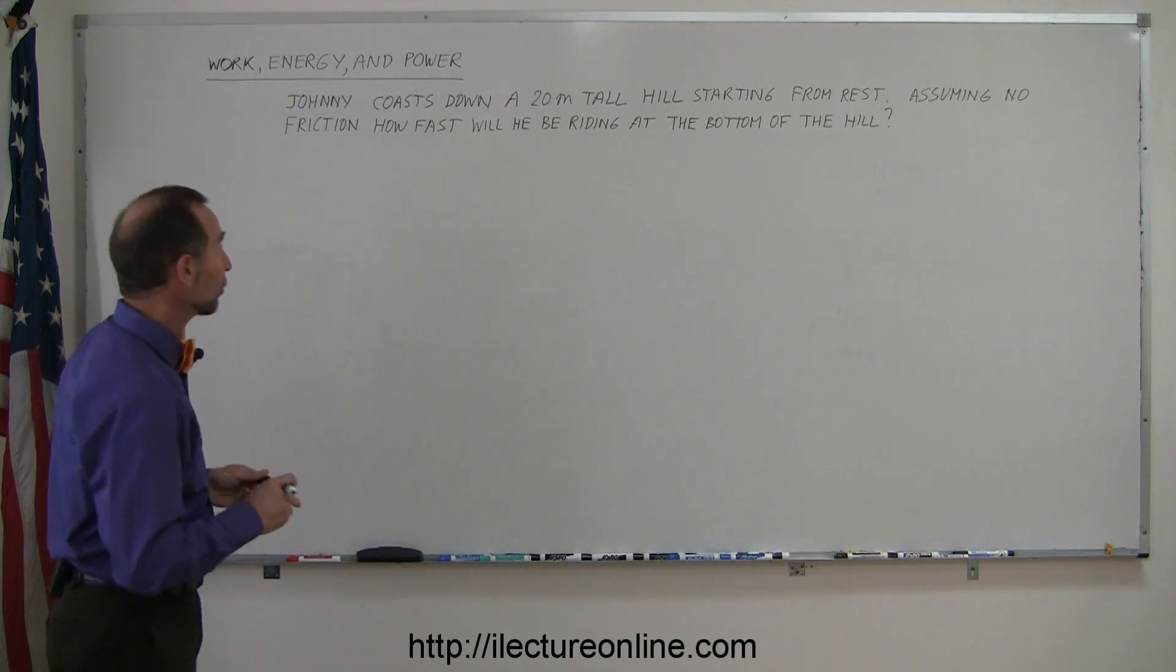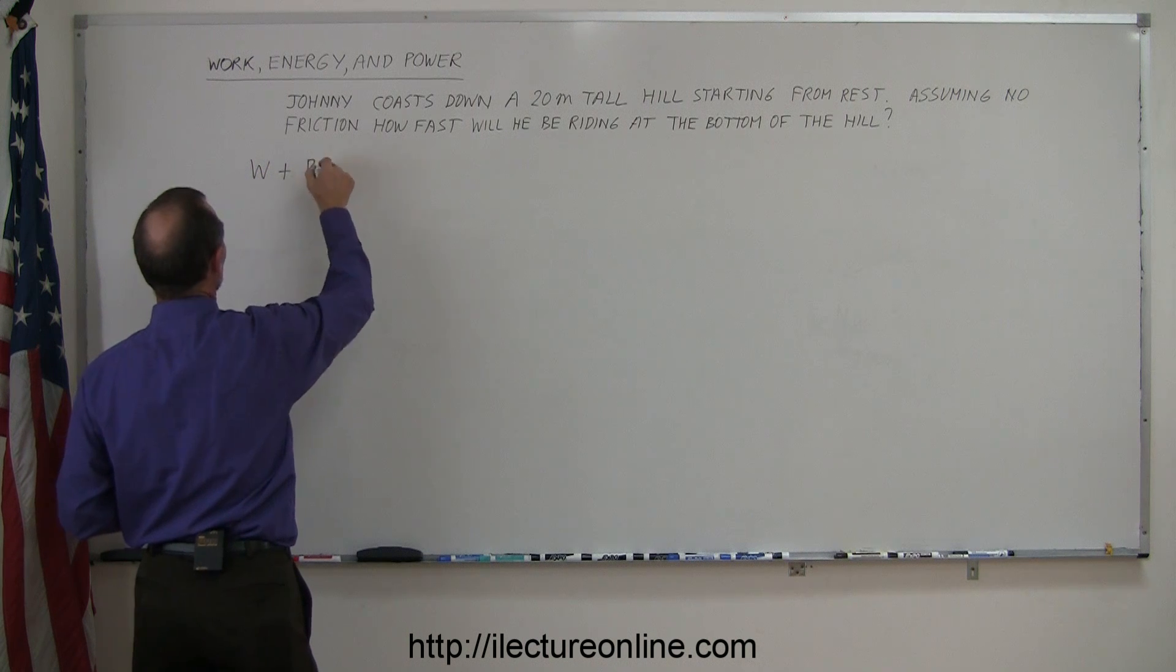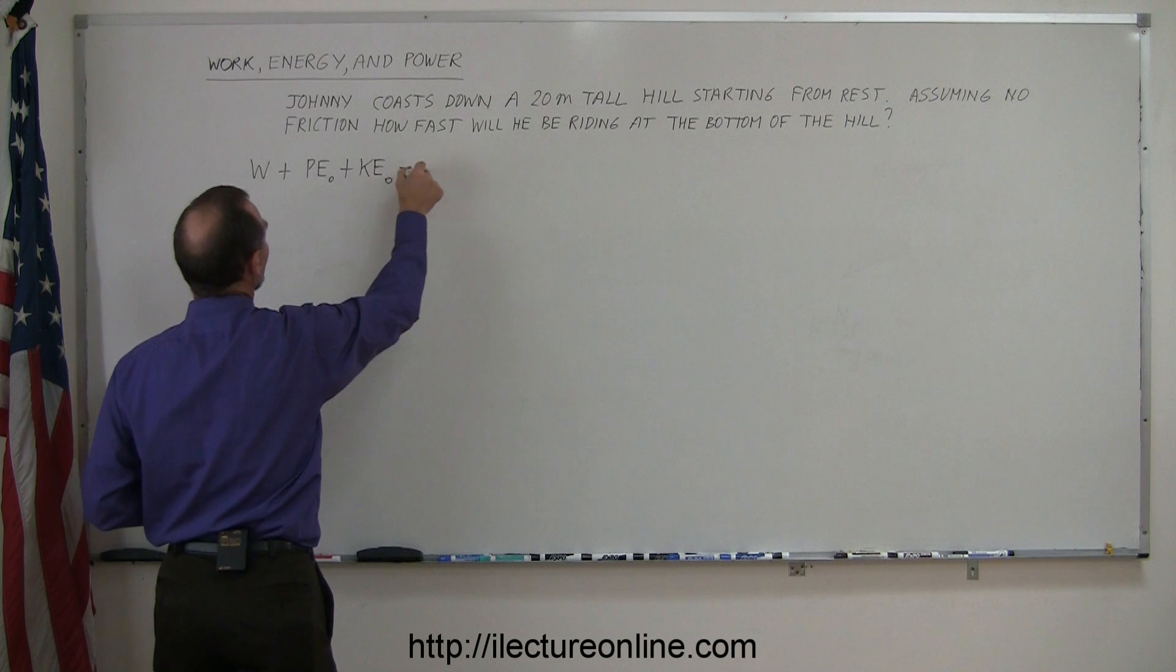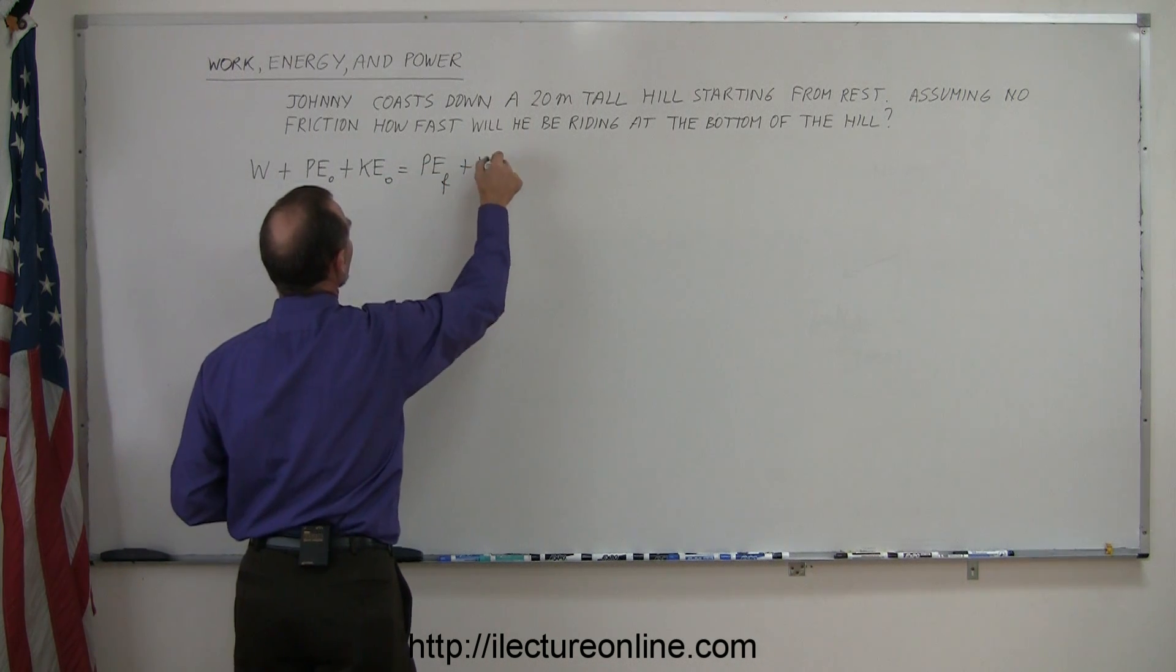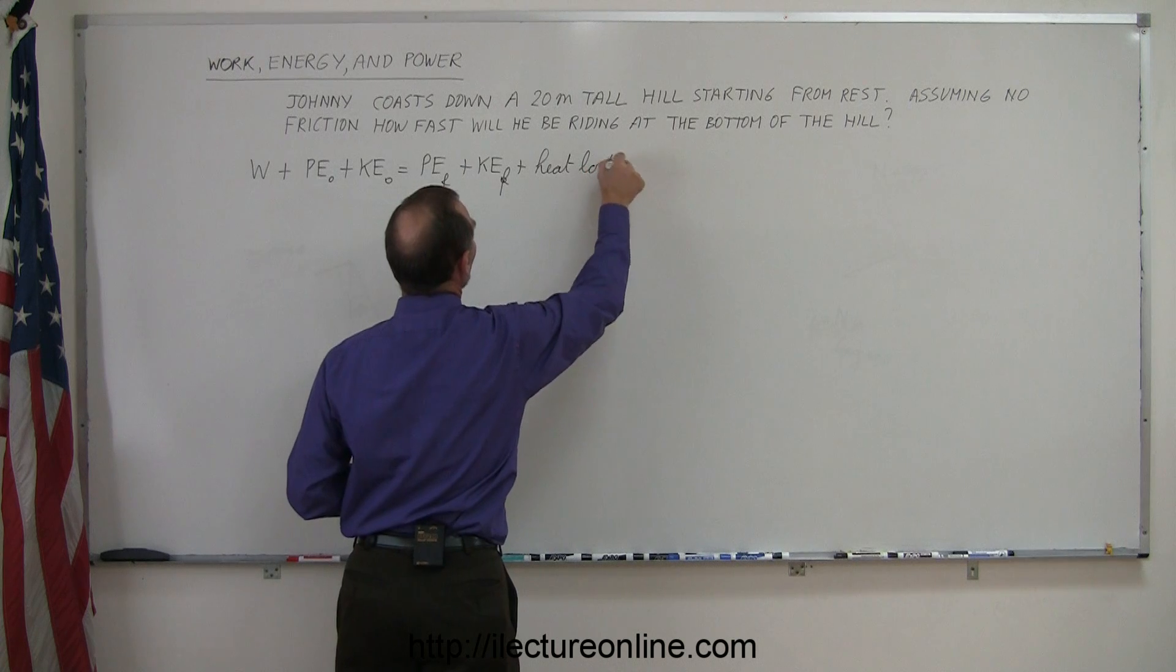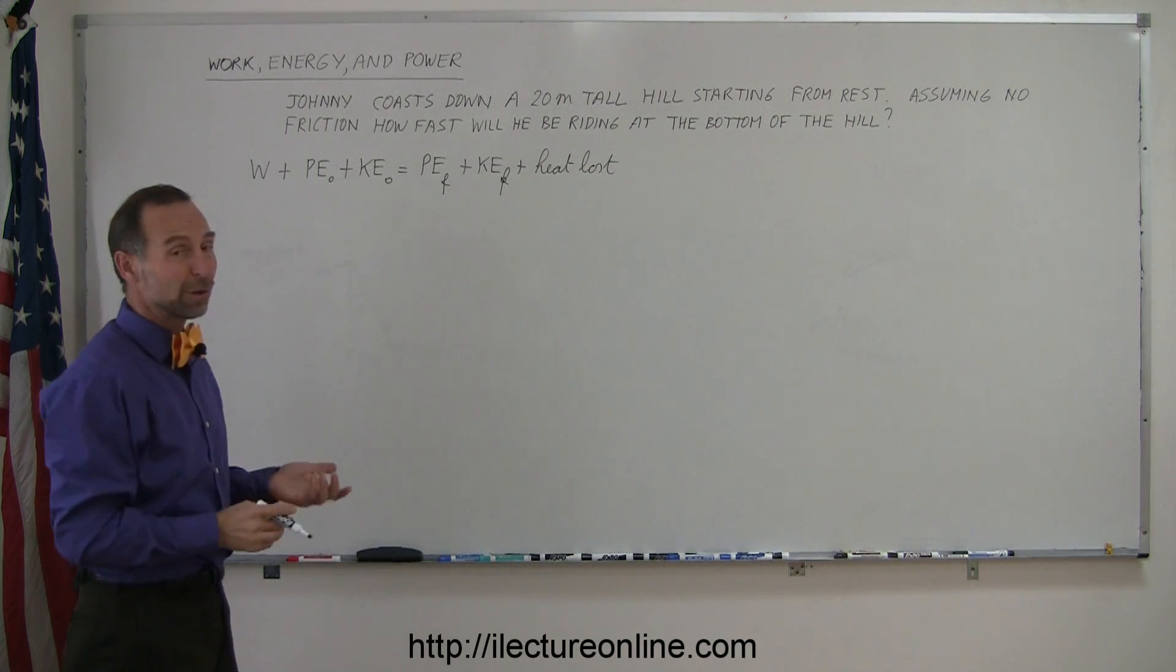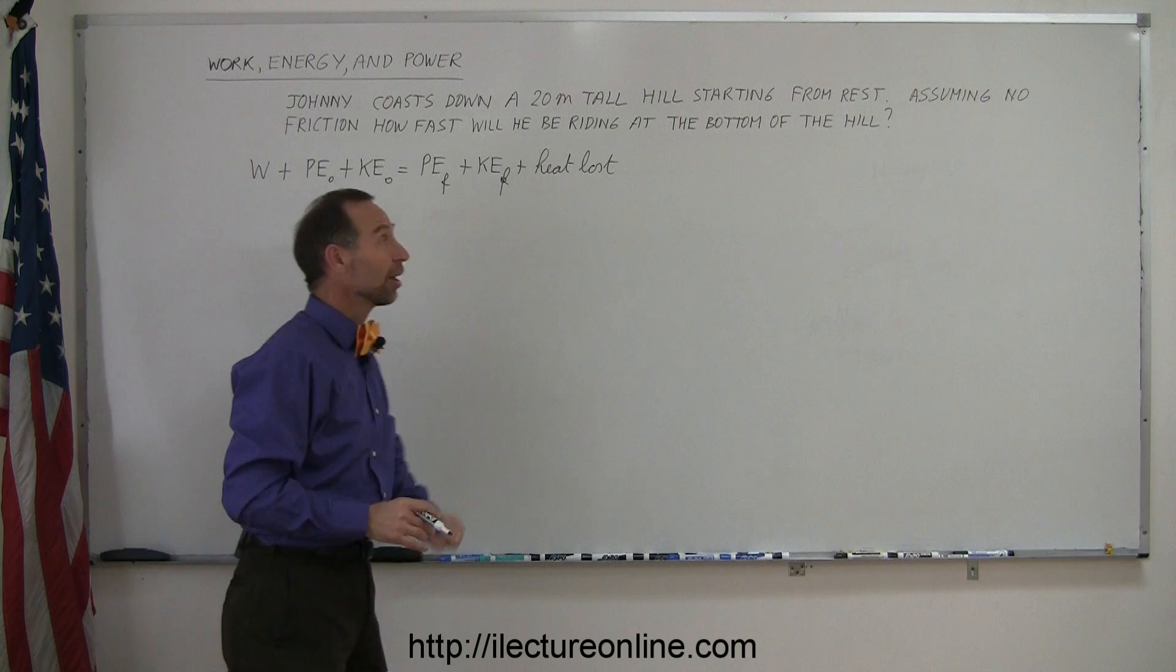The equation that we like to use is any work you put into the system, plus any initial potential energy that you have, plus any initial kinetic energy that you had, is equal to the final potential energy, plus the final kinetic energy, plus any heat lost along the way. Most heat lost is accomplished by overcoming friction or wind resistance or something like that. You can already guess that since there's no friction or wind resistance, we probably don't have any heat lost in this case.